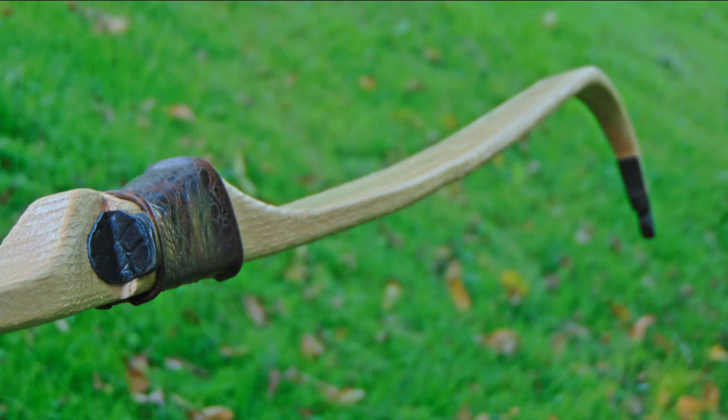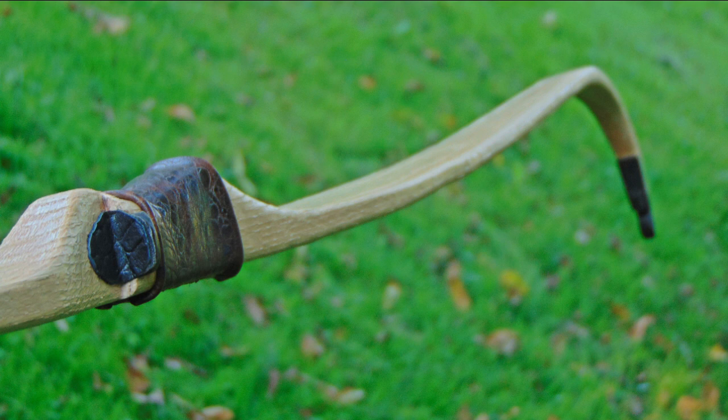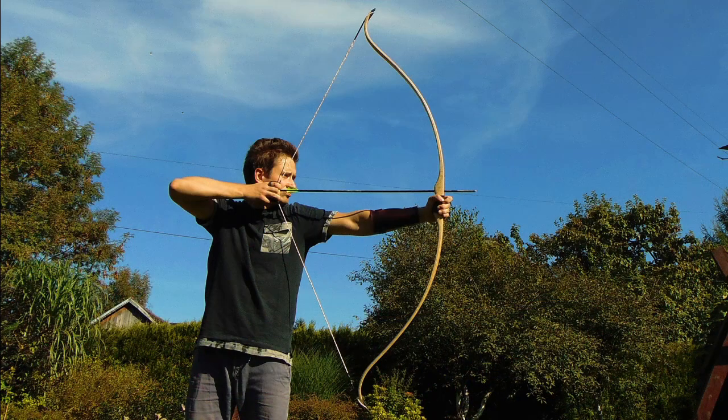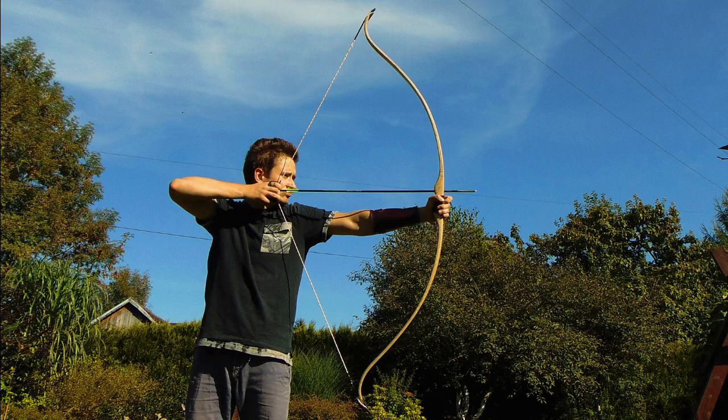The next one is a recurved flat bow. This one is for sure one of my most popular designs. It was built from red oak wood and bent into pretty aggressive recurves. Tillering recurve bows might be pretty tricky, but I just love it.